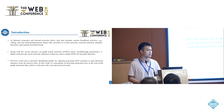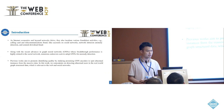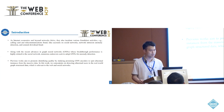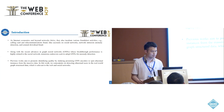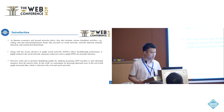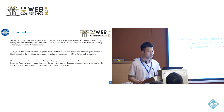As Internet economics and online networks thrive, they also incubate various fraudulent activities — for example, calling card and telecommunications fraud, fake accounts on social networks, network intrusion anomaly detection, and app download fraud. Along with recent advances in graph neural networks, numerous researchers seek to adopt GNNs for anomaly detection, and previous works aim to promote identifying quality by studying promising GNN encoders to spot abnormal instances from massive data.